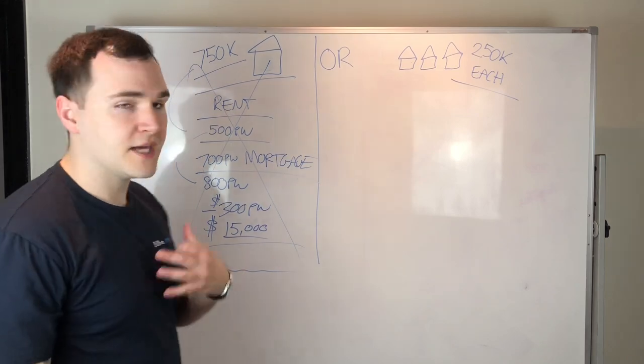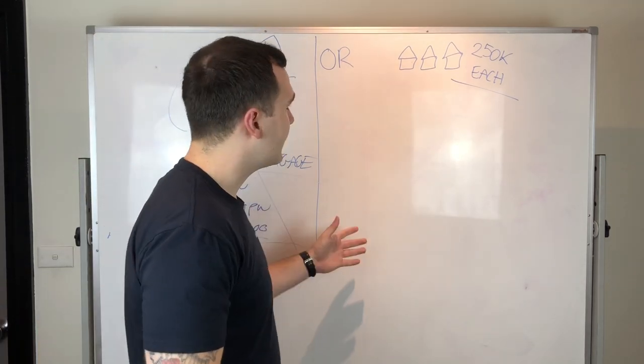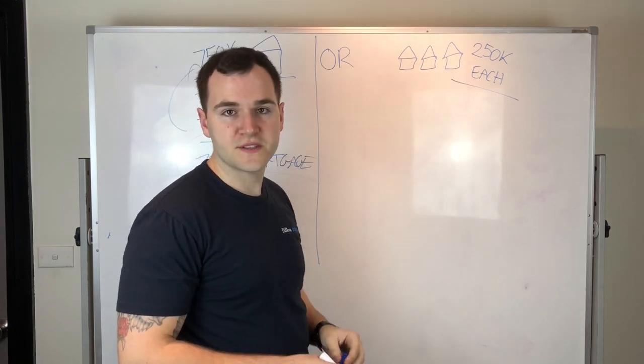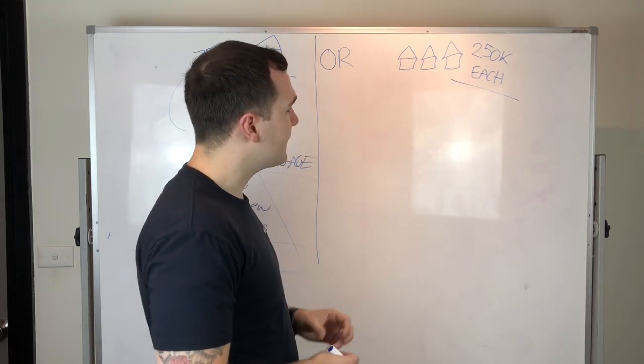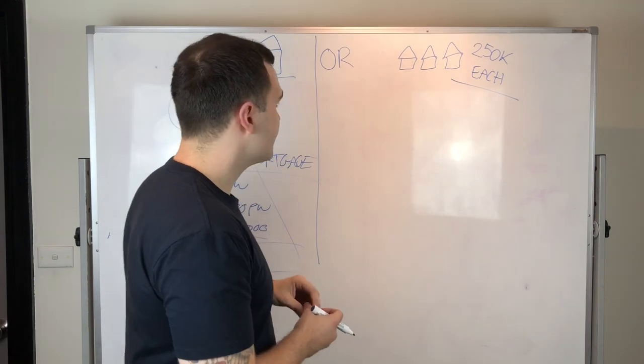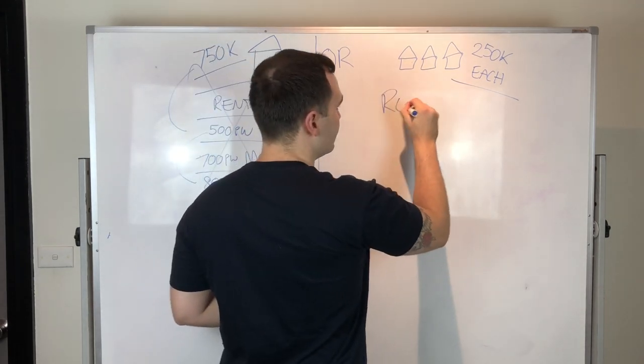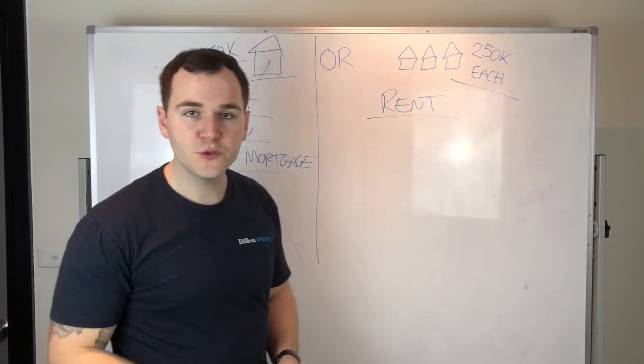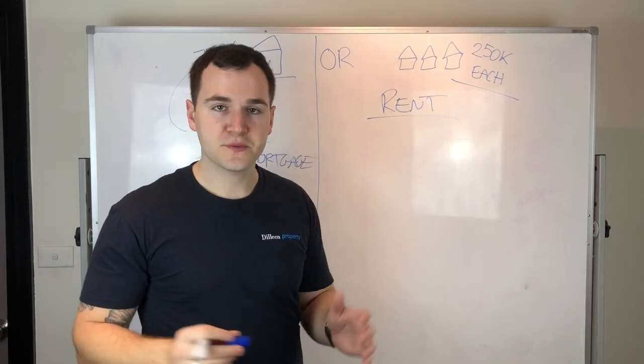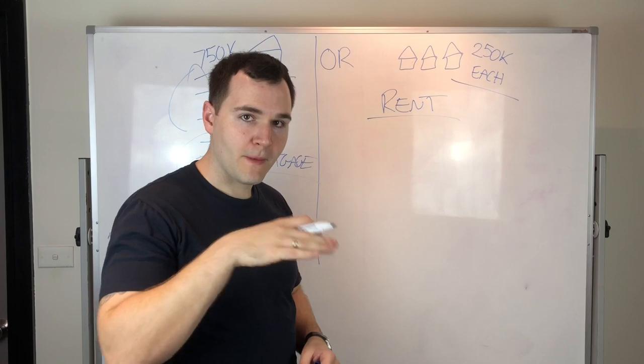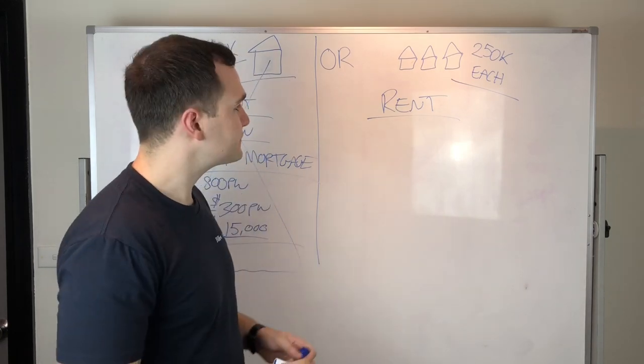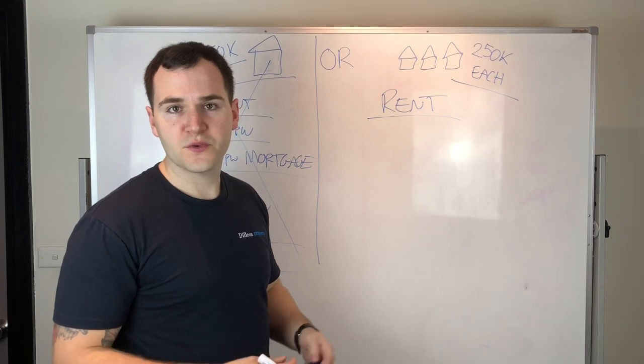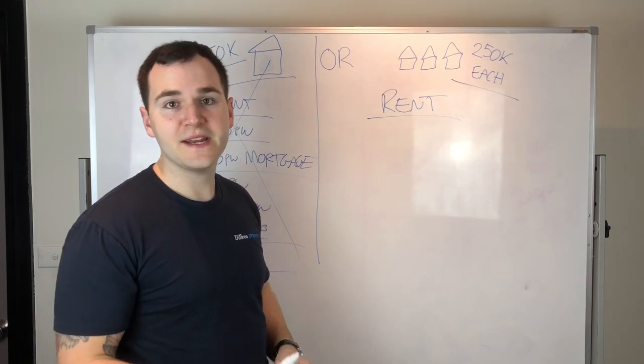What I've done and what I do and what I think is a much better alternative is you buy three properties valued at $250,000 each instead. Going back to the first thing, rent. Rent on a $250,000 property, if you're looking at the right areas, the right capital city, depending on what market cycle you're in, I buy properties for $250,000 and some of those rent out for $360, $380 a week.